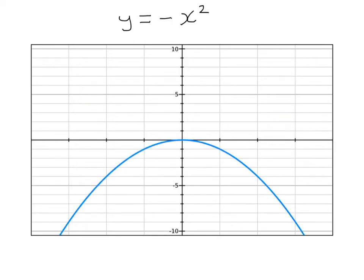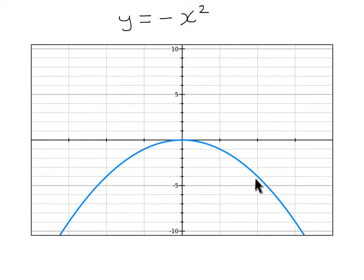Now putting a minus sign in front of the x squared reflects the whole graph in the x-axis. Instead of 1 squared being plus 1, now it's 1 squared with a minus sign in front, that's minus 1. 2 squared is 4, but put a minus sign in front of it is minus 4. So putting a minus sign in front reflects the whole graph in the x-axis.